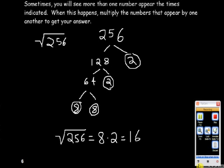Another example of this is 256. 256 can factor into 128 and 2. 128 can factor into 64 and 2, which makes 2 appear twice. Then we can factor 64 into 8 and 8. So we get 8 that appears twice and 2 that appears twice. 8 times 2 is 16, and 16 squared equals 256.